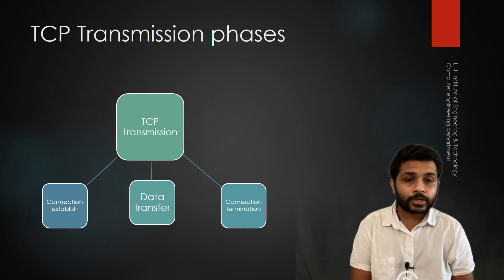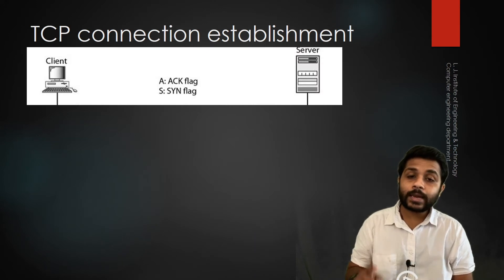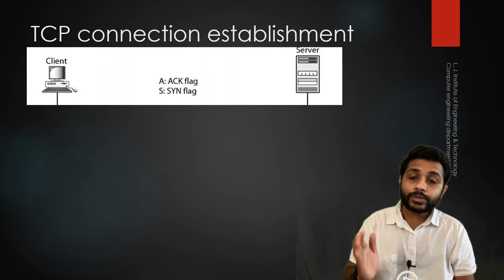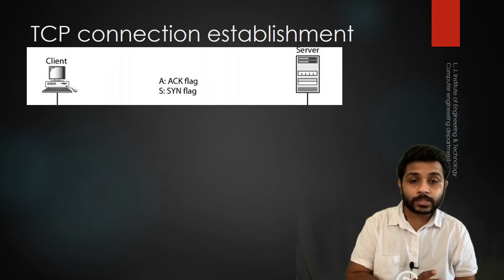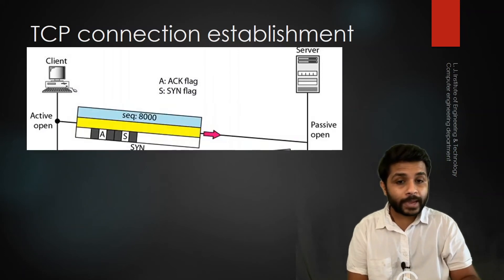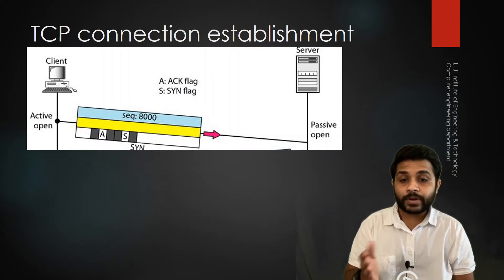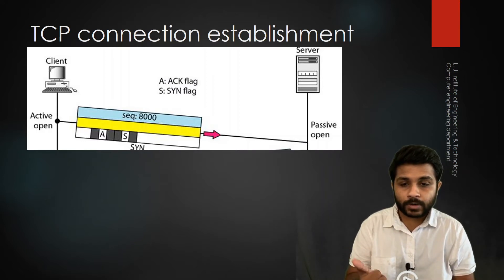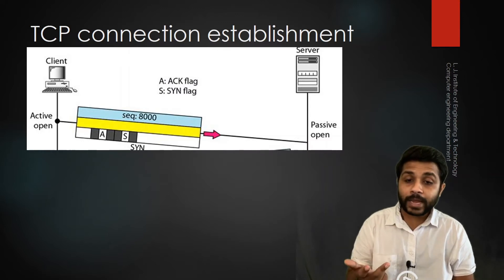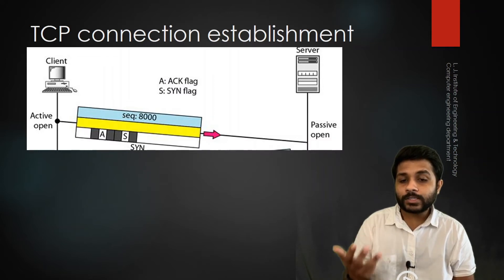Let's look at the first phase: connection establishment. In this figure there is a client and a server. The client wants to make a connection with the server, so it creates one packet. In this packet there are several fields: a sequence number, an acknowledgement flag, a SYN flag, and other information such as the receiver window size.